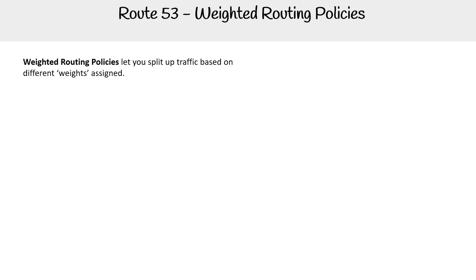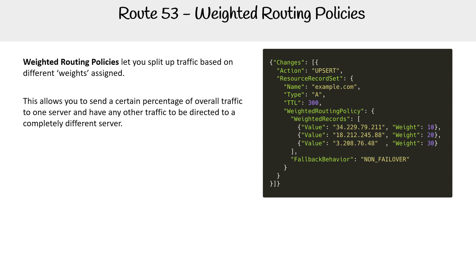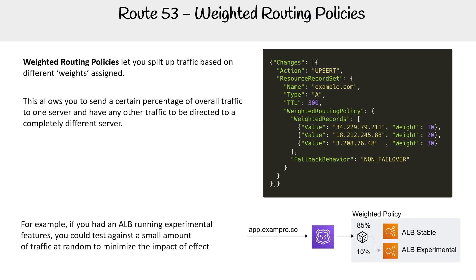Weighted routing policies let you split up traffic based on different weights assigned. This allows you to send a certain percentage of overall traffic to one server and have other traffic directed to a completely different server.